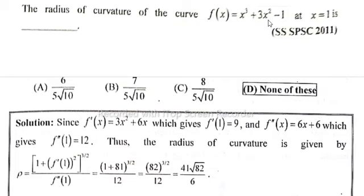f(x) is equal to x³ plus 3x² minus 1 at x equals 1. Solution: First of all, differentiate with respect to x on both sides. f'(x) is